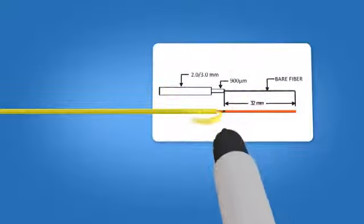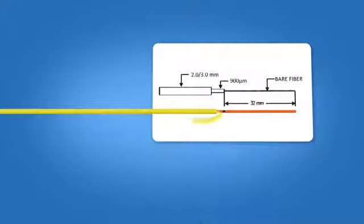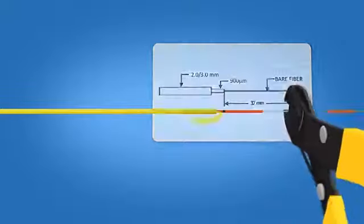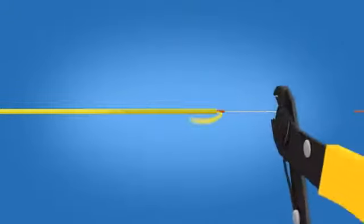Using the template on the front of the connector packaging, mark the fiber at 32 mm from the end of the 900 micron fiber. Strip 32 mm of 900 micron and 250 micron coating off, exposing the bare fiber. Clean the fiber with a lint-free wipe and fiber preparation fluid.